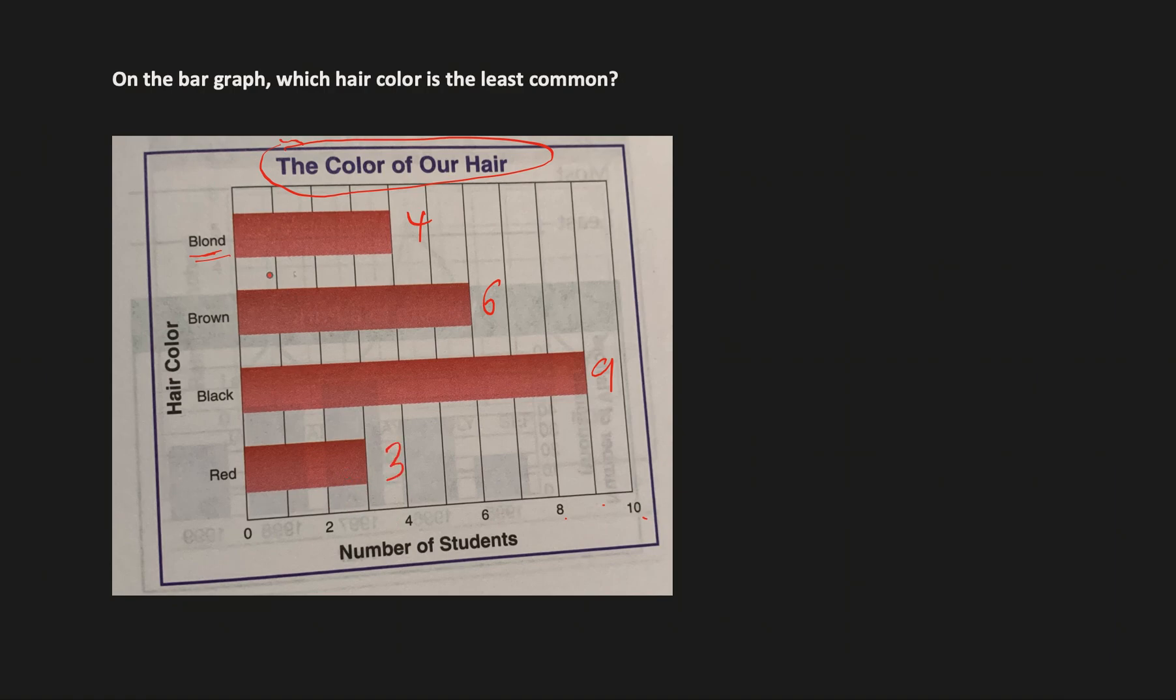The question says on this bar graph which hair color is the least common. We can see that three obviously is the least here, and we can say that red hair color is the least common.